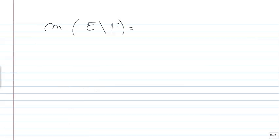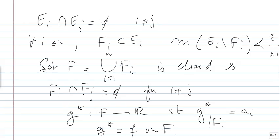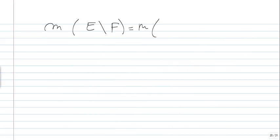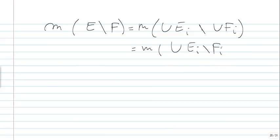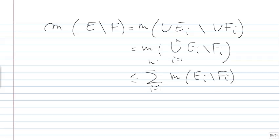The measure of E minus F equals the measure of the union of E_i's minus the union of F_i's, which equals the union of (E_i minus F_i), which is less than or equal to the sigma sum of the measures of (E_i minus F_i). That's why we need epsilon over (N+1) — so this will be less than epsilon.